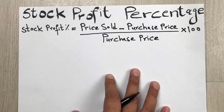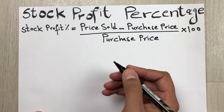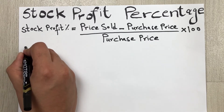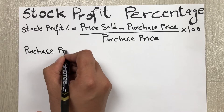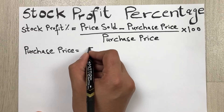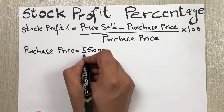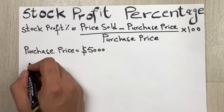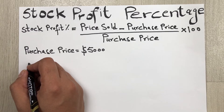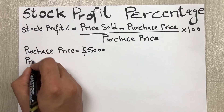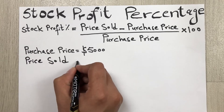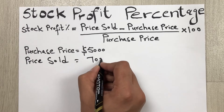Now let's say you buy some stocks and the purchase price of those stocks is five thousand dollars. You sold those stocks at the price of seven thousand dollars, so the price sold is equal to seven thousand dollars.